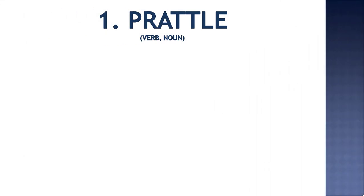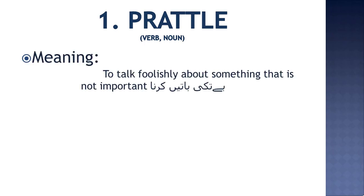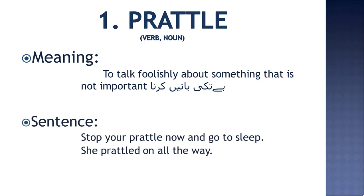Our first vocabulary word is 'prattle'. Prattle is both a verb and a noun. It means to talk foolishly about something that is not important — in Urdu, 'betu ki baatein karna'. Sometimes we sit and keep talking uselessly about random things; that is prattling. The word 'prattle' is used both for the action (verb) and for such foolish talk itself (noun). For example: 'Stop your prattle and go to sleep.'